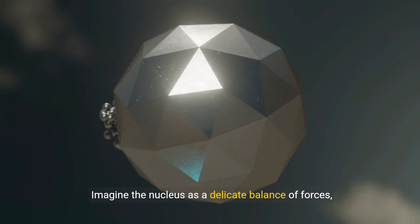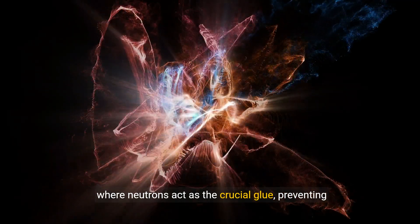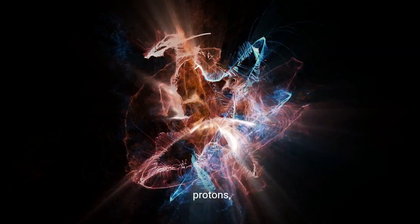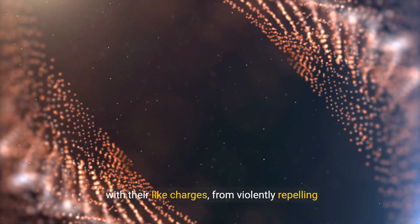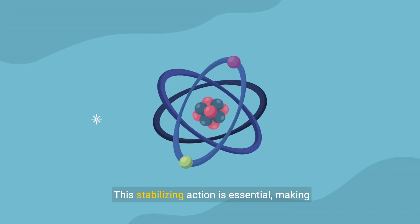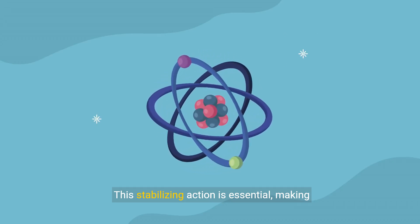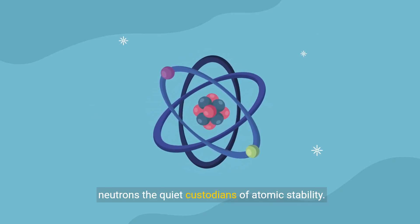Imagine the nucleus as a delicate balance of forces, where neutrons act as the crucial glue, preventing protons, with their like charges, from violently repelling each other. This stabilizing action is essential, making neutrons the quiet custodians of atomic stability.